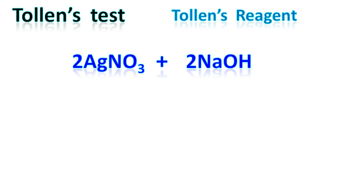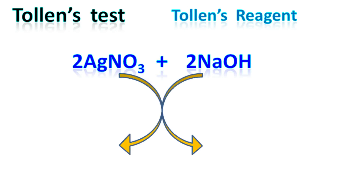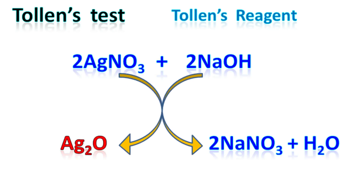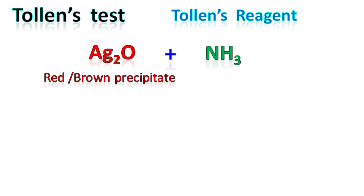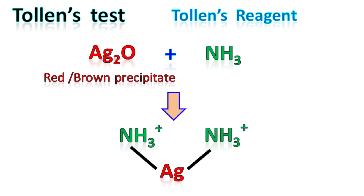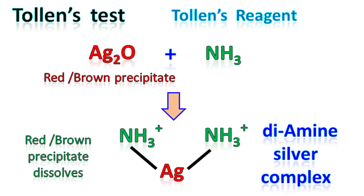Tollens reagent is made by mixing silver nitrate with sodium hydroxide, and this reaction results in the formation of red-brown precipitates of silver oxide. The red-brown precipitates of silver oxide are then reacted with ammonia, which results in the formation of the soluble diamine silver complex, also known as ammoniacal silver.